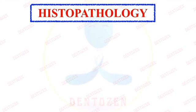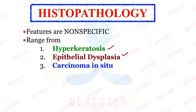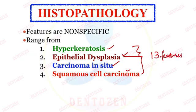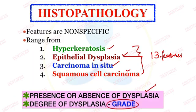Now histopathology of leukoplakia. When biopsy is taken from the white patch, features are non-specific and can range from hyperkeratosis, epithelial dysplasia, carcinoma in situ, to squamous cell carcinoma — any of these four findings can be seen. In the histopathology report, two things must be mentioned: the presence or absence of dysplasia, and if present, its grade — mild, moderate, or severe.